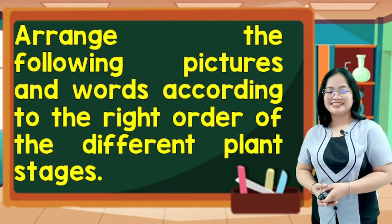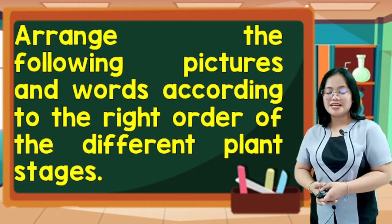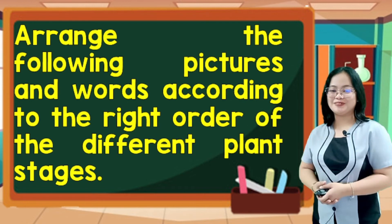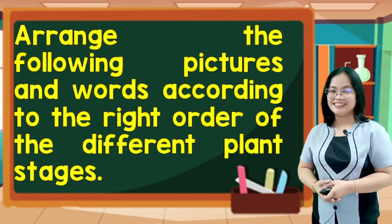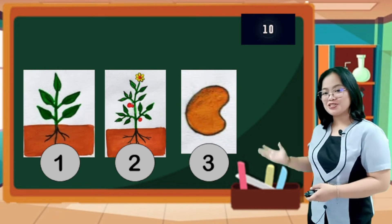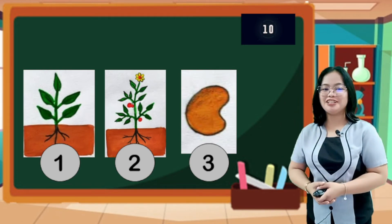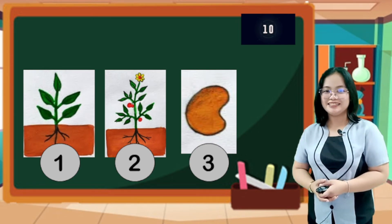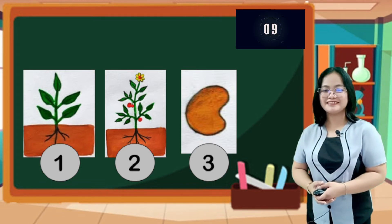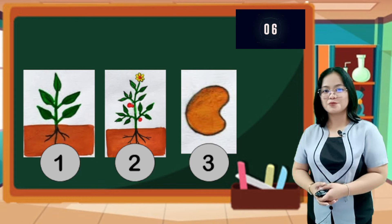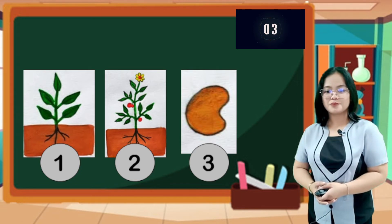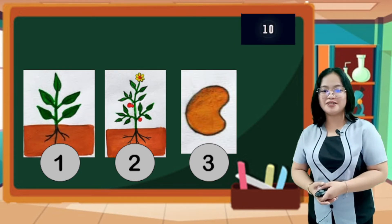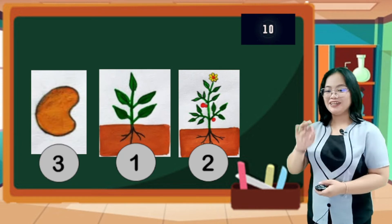Learning check! Let us arrange the following pictures according to the right order of the different plant stages. Just comment your answer below. Are you ready? Then let us begin. You have 10 seconds to observe the set of pictures carefully and type the correct arrangement of the different life stages. Timer starts now. The correct arrangement is number 3, 1, and 2. Good job, kids!